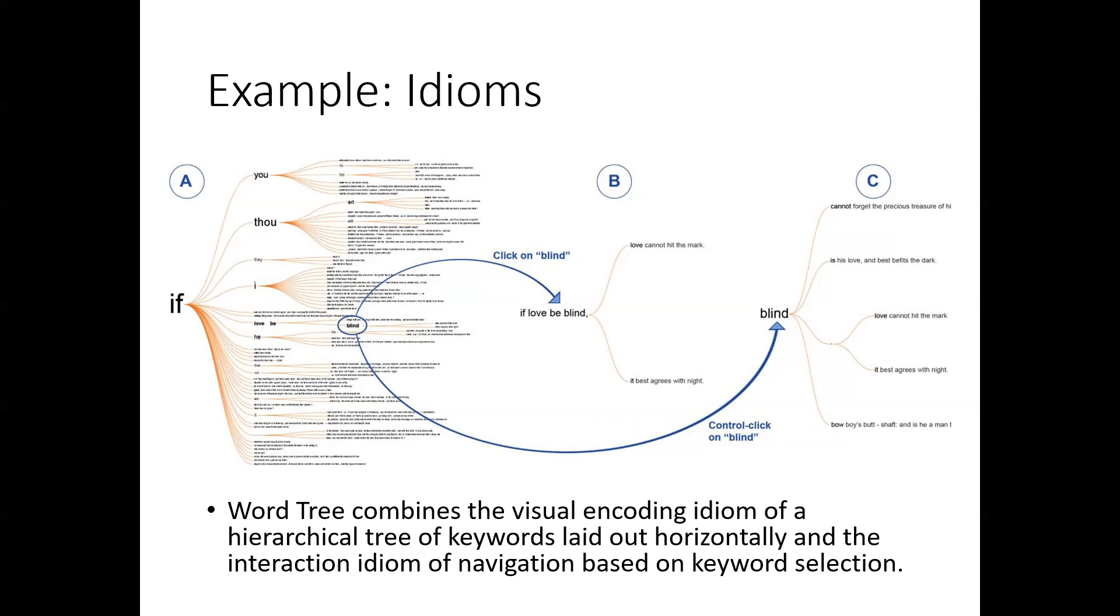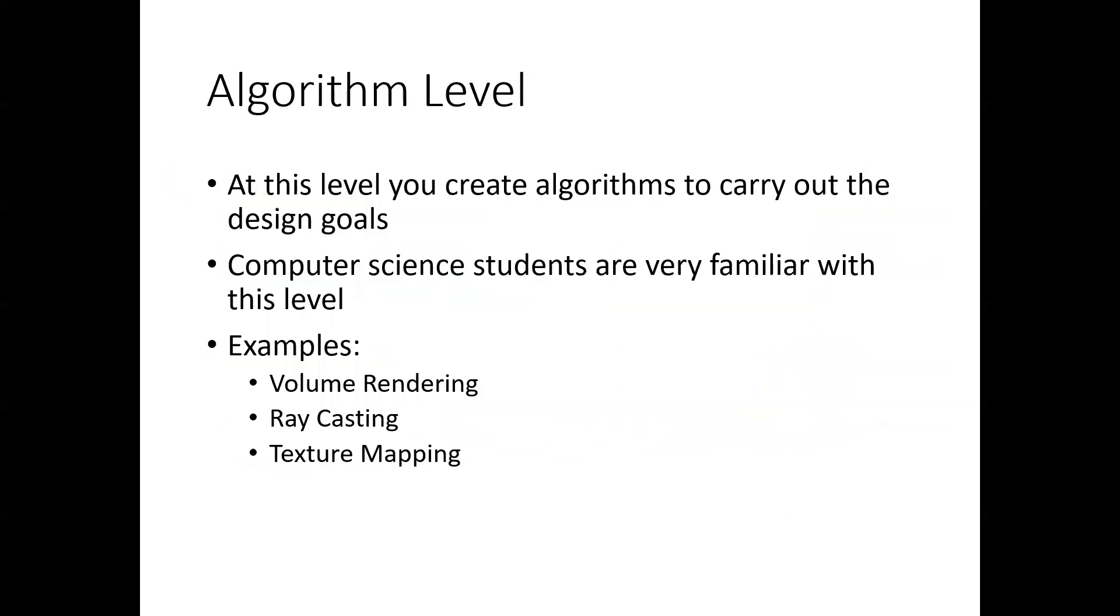And then at the algorithm level, we want to create algorithms to carry out the design goals. Computer science students are very familiar with this level. Examples that we might have in visualization are volume rendering, ray casting, or texture mapping. And how do you do things?